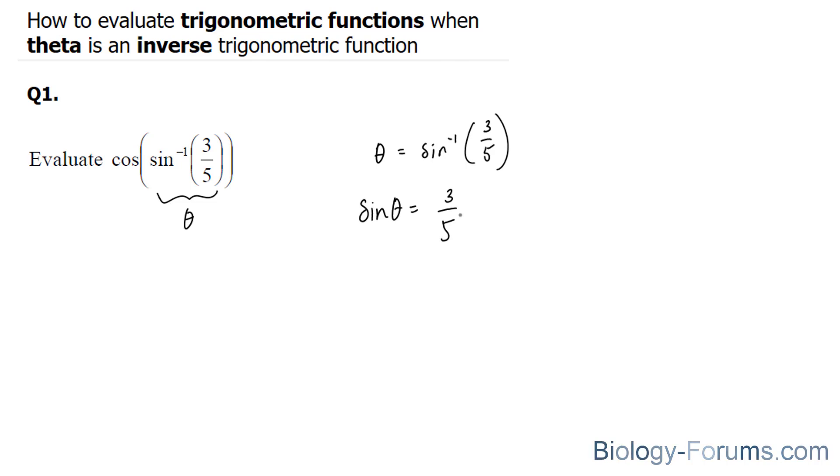Now, remember, sine compares the opposite over the hypotenuse. So this is your opposite, and this is your hypotenuse. So if we were to create a makeshift right triangle, and we call this side our opposite, and this side our hypotenuse, we can technically find this side by using the Pythagorean theorem. And if you use the Pythagorean theorem to find this side, you should end up with the number 4.